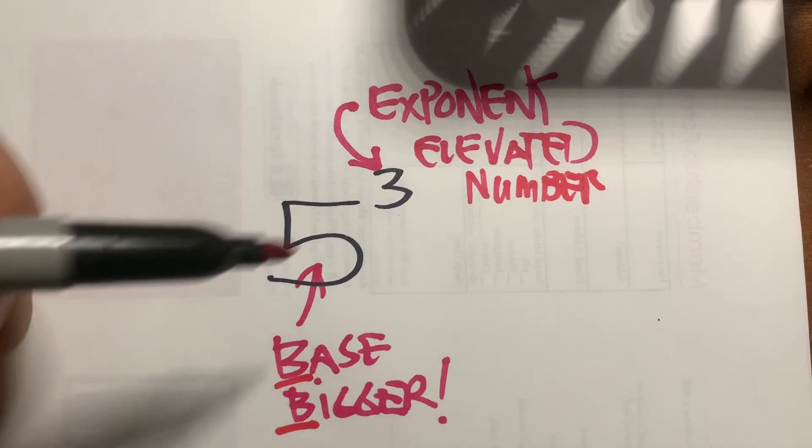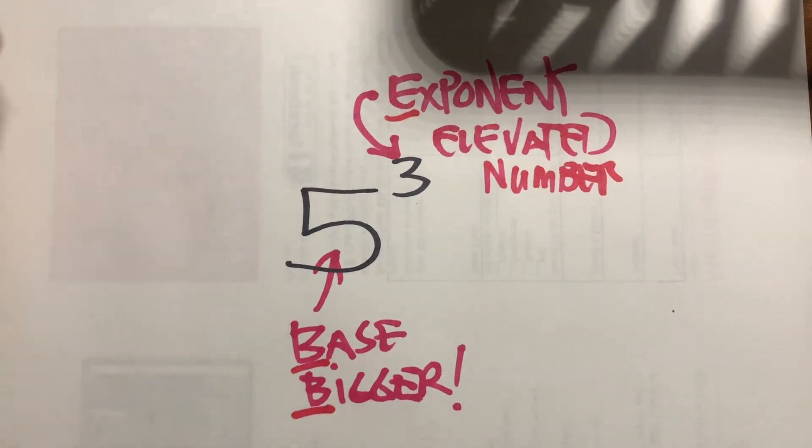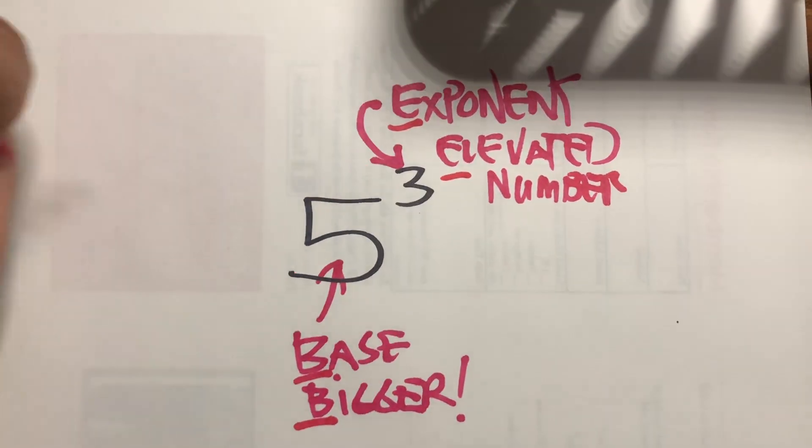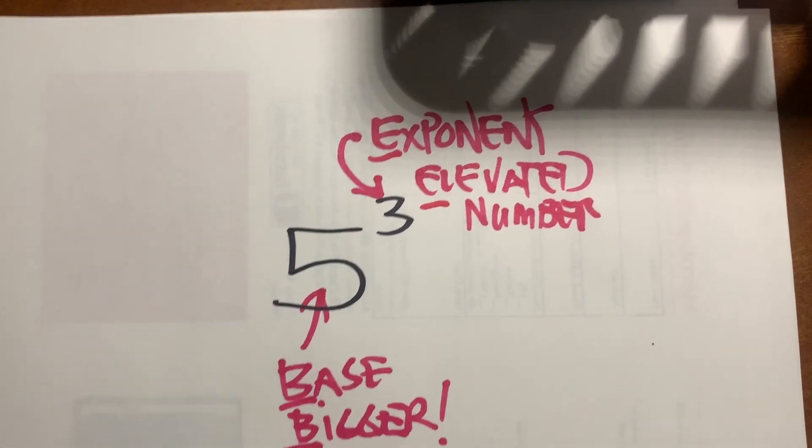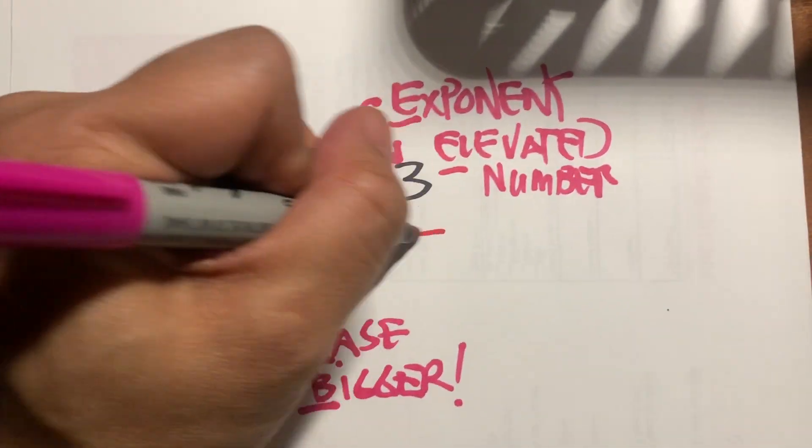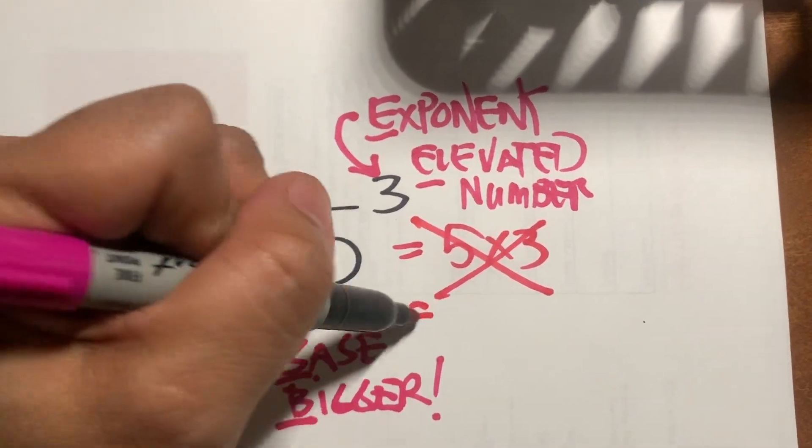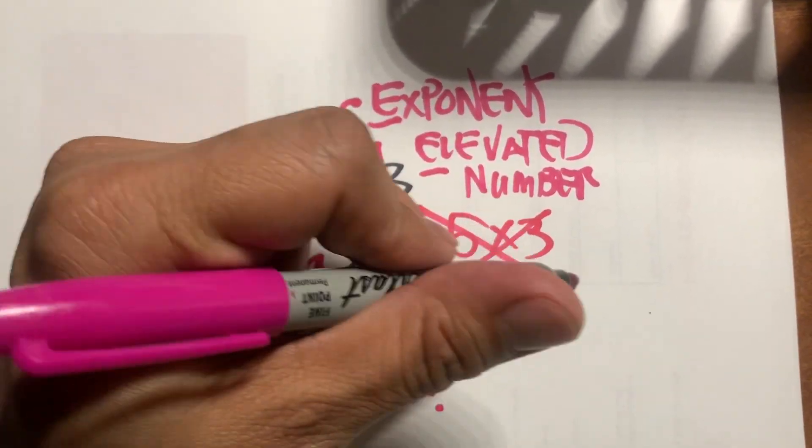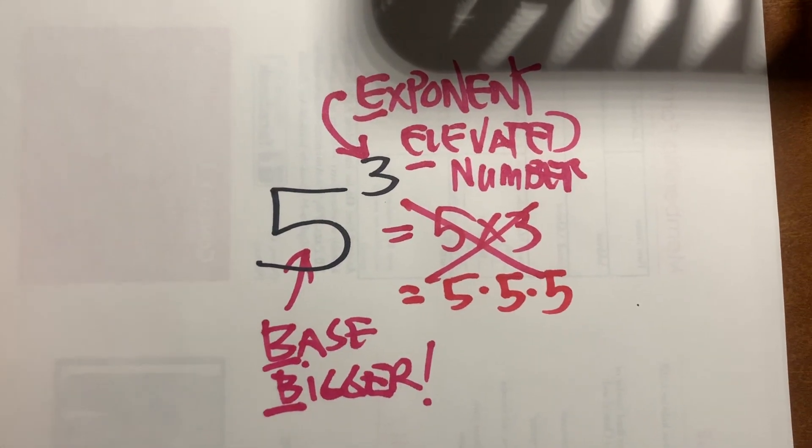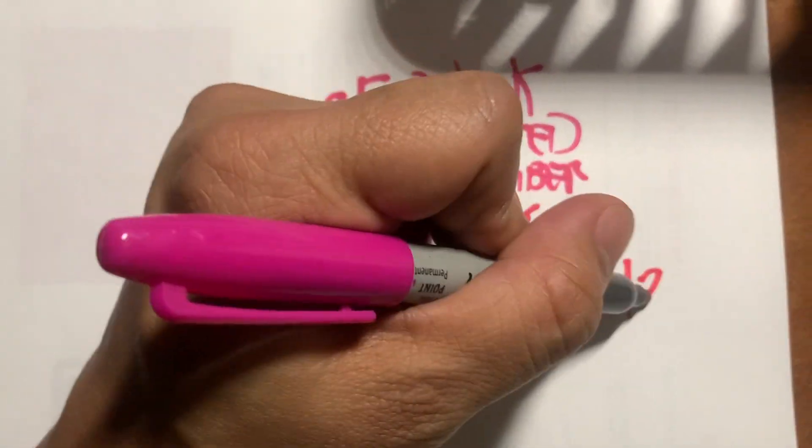So B, base, bigger. E is the exponent, and the elevated one. And of course, you know that five to the third is never five times three. Never do that. It actually means five times five times five, which is 125.